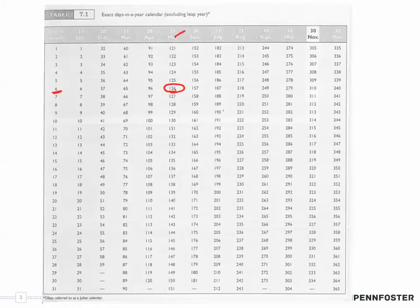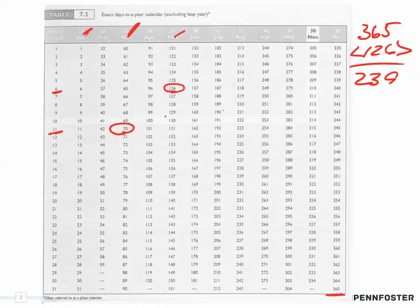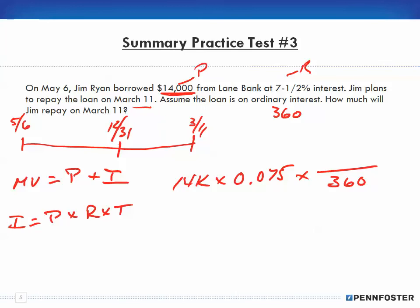We're over here at May 6th, that's day 126, and we're going to the end of the year at 365, so we take 365 and subtract 126, that's 239 days. But that's to the end of the year at December 31st, so from January 1st we have to go all the way over to March 11th, so that's an additional 70 days. That means the number of days is 309.